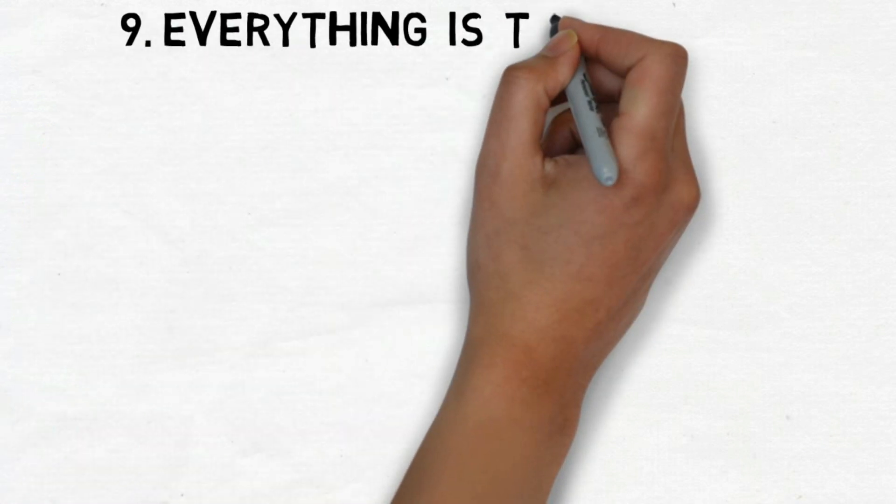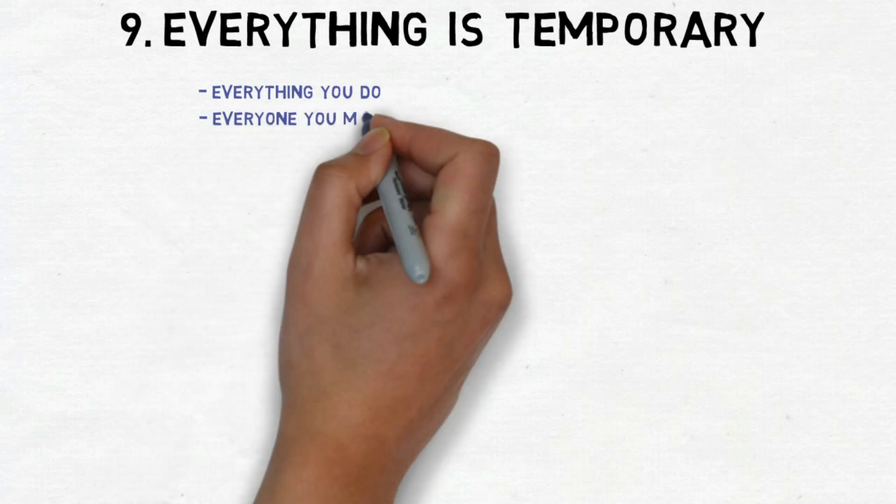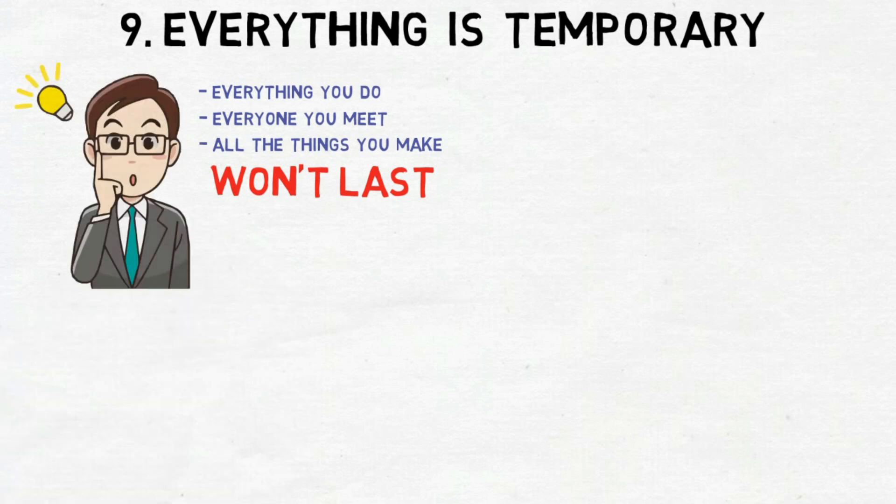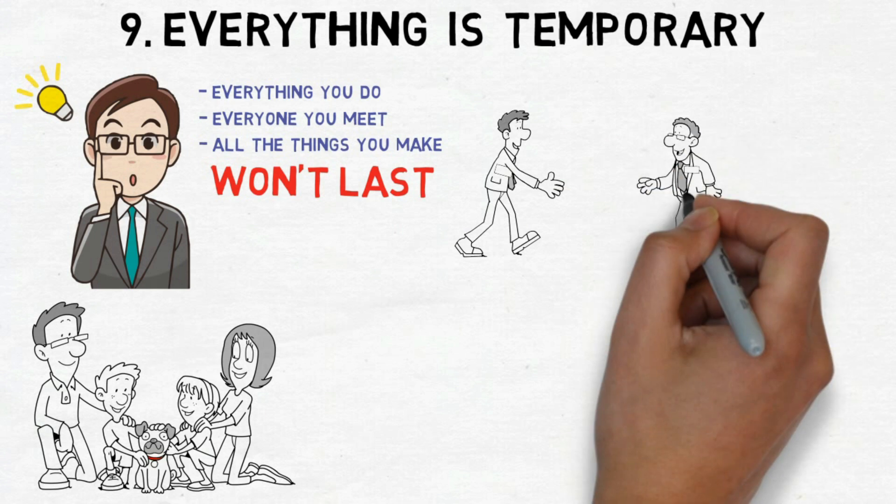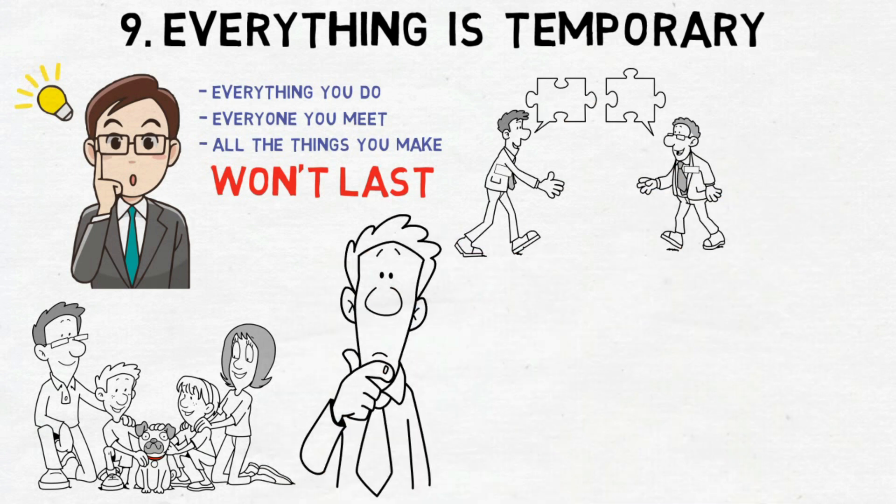Number 9. Everything is temporary. Realizing that everything you do, everyone you meet, and all the things you make won't last, can be a big enlightening moment. Your family pet won't live forever, your relationships won't last forever, and the things you get will only be around for a short time. In reality, nothing lasts forever.